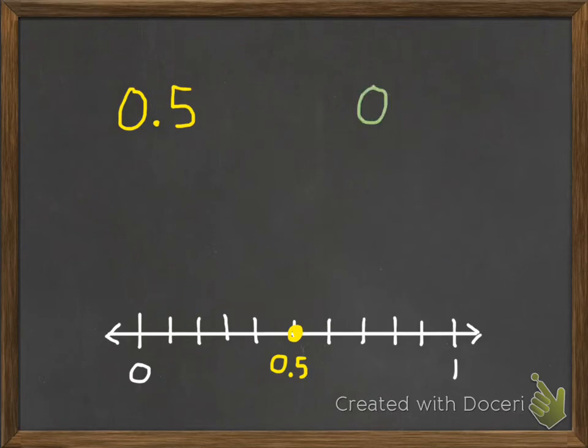If I had a second decimal such as eight tenths, I could do the same. Although I wouldn't have to go all the way from zero, I could keep counting on from five tenths. So six, seven, eight tenths. And I can plot this as well.